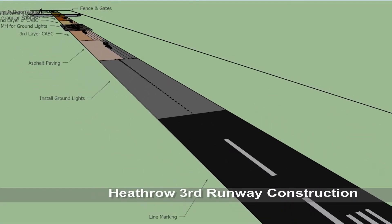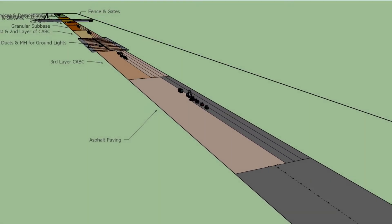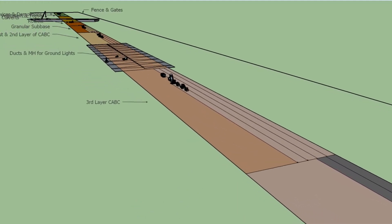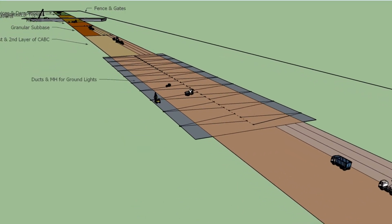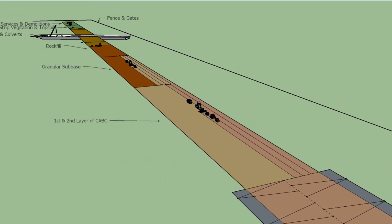London Heathrow Airport Third Runway construction. This 3D animation shows the construction sequence, methods and plant to construct a runway in a way that is easily understood.